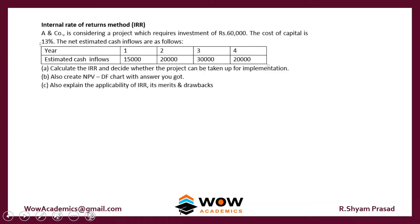The problem states that A&Co is considering a project which requires an investment of 60,000. The cost of capital is 13%, and the estimated cash inflows are 15,000, 20,000, 30,000, and 20,000 for the fourth year. Our job is to calculate the IRR and determine whether the project should be invested in or not.